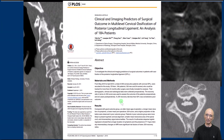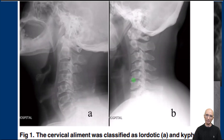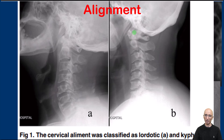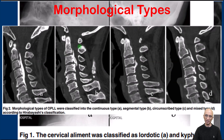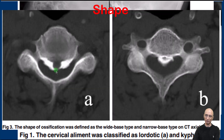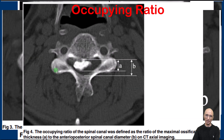In this article they were looking at clinical and imaging predictors for surgical outcome in patients with OPLL. They looked at various parameters on the radiographs, including alignment of the cervical spine — whether it was lordotic or kyphotic — and again classified the ossification into four categories. On the axial images they classified whether it was broad-based or narrow-based, and they also looked at how much of the OPLL was occupying the spinal canal, i.e., the occupying ratio.